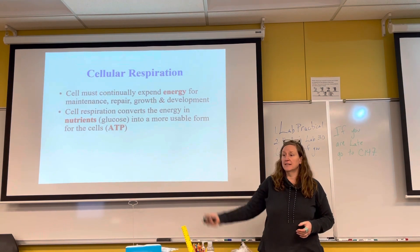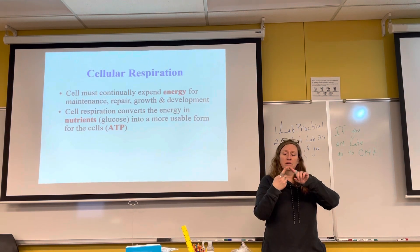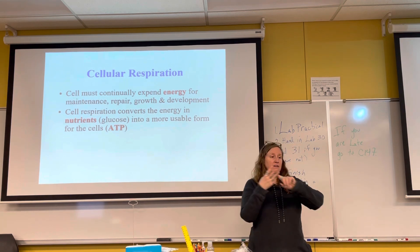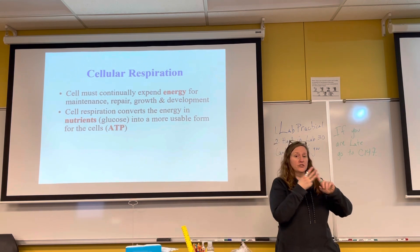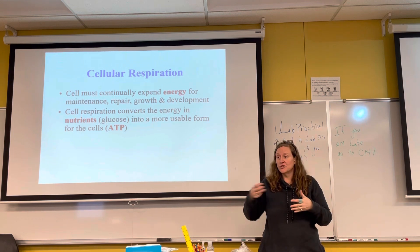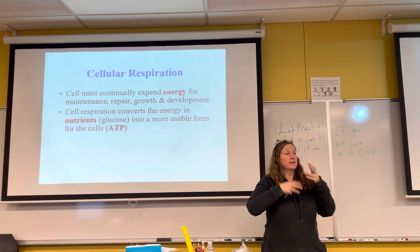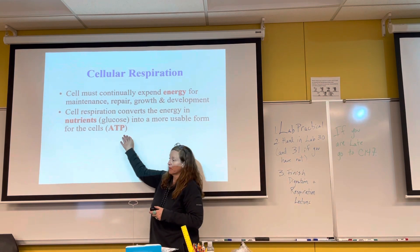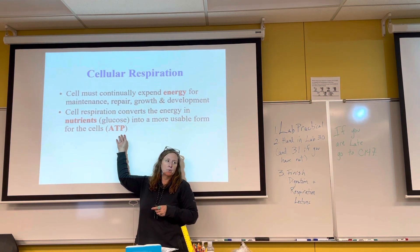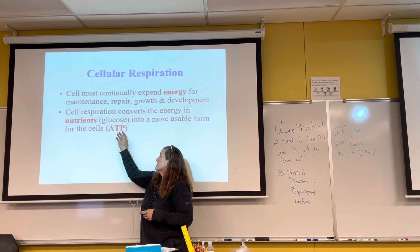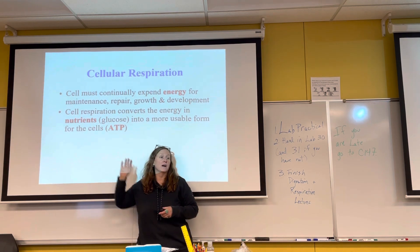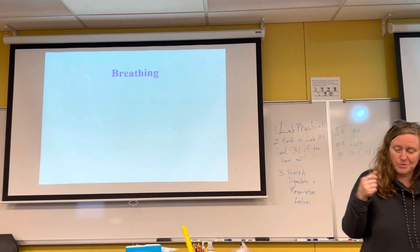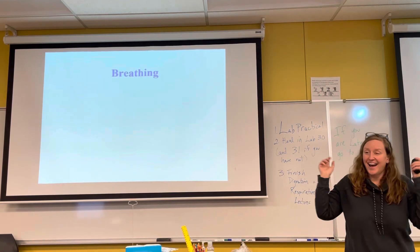ATP is the currency of our cells. Our carbohydrates, proteins, and fats are all too big to fit into our cells and need to be broken down. ATP is the most usable form of energy in our cells. So how do we get the oxygen in? We breathe.